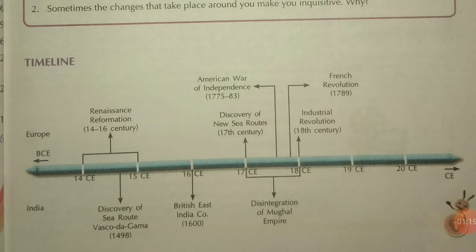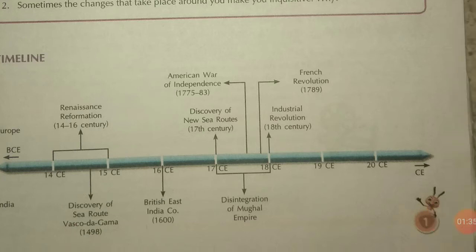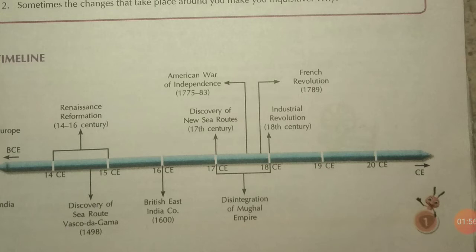If we see about the 16th century, the British East India Company was established. Between the 17th and 18th century, there is the disintegration of the Mughal Empire, which we will see in this chapter. In the 17th century, the discovery of new sea routes occurred; the Industrial Revolution is there in the 18th century; and also the American War of Independence and the French Revolution.